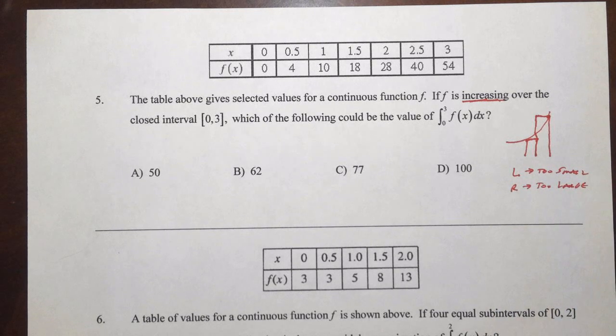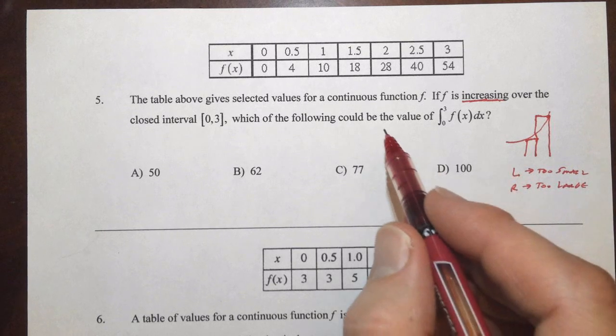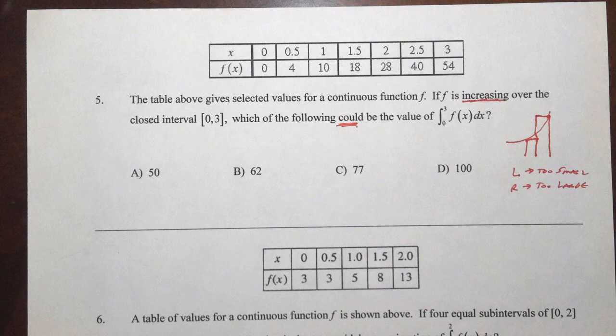I don't know if you can see what they're looking for you to do here, but they actually want you to find a left and a right sum. The left sum will be too small, the right sum will be too large, therefore the answer of which one could be a value should be in between those. So let's do a quick left sum and a quick right sum here and see if we can come up with some values.